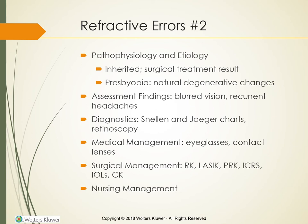Conductive keratoplasty (CK), used only for presbyopia, applies heat to the periphery of the cornea to make it tighter and steeper; clients generally experience immediate improvement. Retreatment may be necessary as this is not a permanent correction. Any procedure can result in overcorrection or undercorrection. Other complications include decentered ablation, dry eye syndrome, epithelial abrasion, or infection. With RK, increased glare from micro-scarring may occur. With LASIK, complications include wrinkles in the flap, debris under the flap, a displaced flap, or infection or inflammation of the flap.